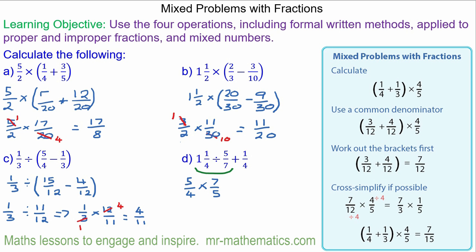And we can cross-simplify by dividing by five. So that becomes one and this becomes one. We have one quarter times seven over one which is seven quarters.